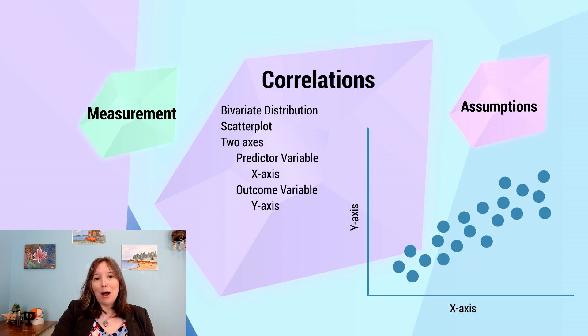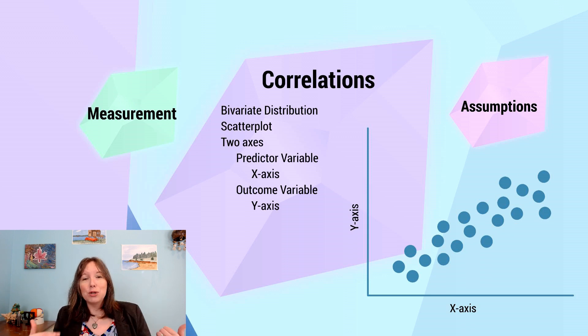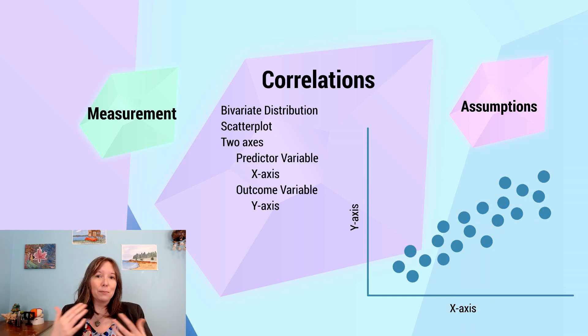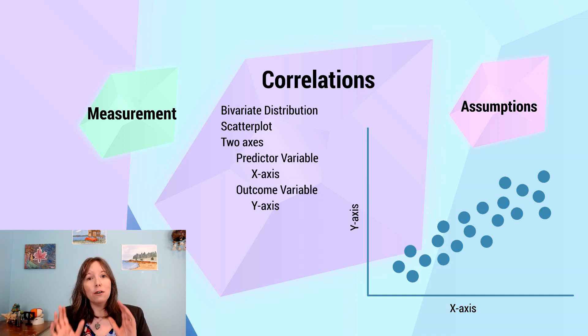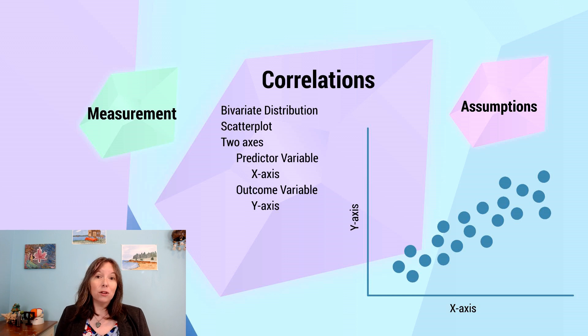Now, aside from just describing a distribution using one variable — that is birth weight, intelligence, reaction time — we can also start to look at the distributions of two variables. And that's when we look at correlations.